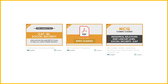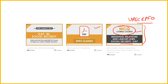Before we start the class, the PDF files for all EPFO lectures on YouTube are linked in the description. You can also purchase the MCQ combo course which has important MCQs on industrial relations, labor law, and social security. If you take the MCQ combo course, you won't need a separate PDF subscription. There is currently a 50% discount — use the code UPSC EPFO to get the discount.